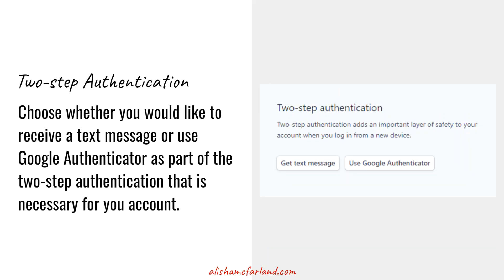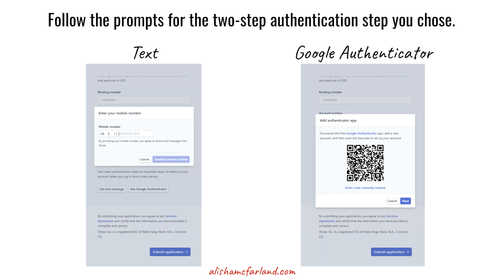Then let them know how you want to provide two-step authentication. This is required every time you log into your Stripe account. It's absolutely for your safety and protection, so don't be annoyed by this extra step — it ensures no one can access or use your account unauthorized. If you want to receive a text message, click that button. If you want to use the Google Authenticator app, click that button. You'll either need to enter a mobile number or use the app to scan in the QR code.